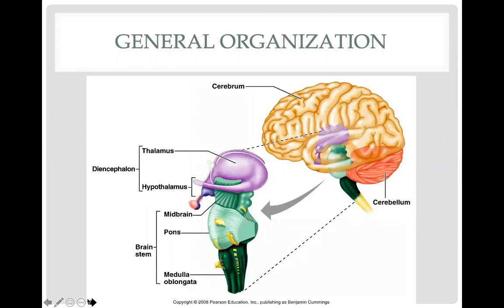Your brain is broken down to four major structures, each of which may have sub-structures within them. Starting with the cerebrum — depicted in yellow in this picture — this is the largest part of your brain, responsible for receiving sensory data, integrating that data, making sense of it, and also voluntary control of your skeletal muscle movement. Inferior to your cerebrum in the posterior aspect of your brain, you have your cerebellum, depicted in orange.